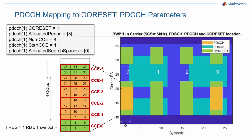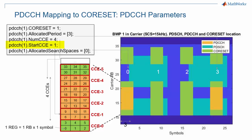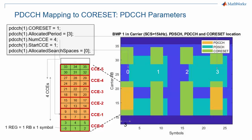Here we have a more detailed look at the PDCCH parameters. The first line specifies which core set the PDCCH is mapped to. The period shows that the PDCCH is mapped every 3 core set occurrences, and the allocated search space parameter indicates the allocation is in occurrence number 0. From a time and frequency point of view, the PDCCH starts at CCE number 1, which is the second CCE, or group of 6 resource element groups, and uses a granularity of 4, meaning it includes 4 CCEs, or a total of 24 resource element groups. Note that CCE number 0 corresponds to the first CCE within the core set.